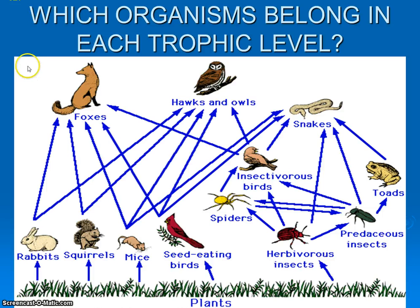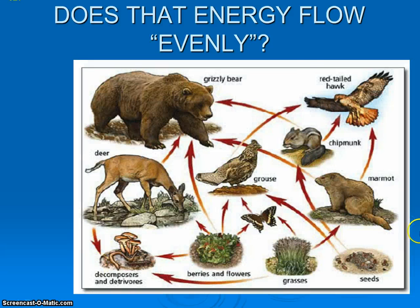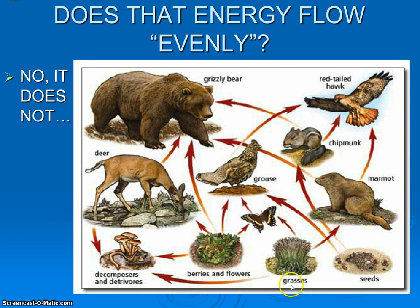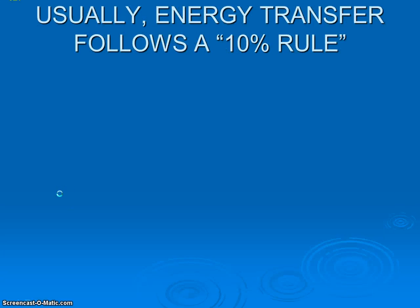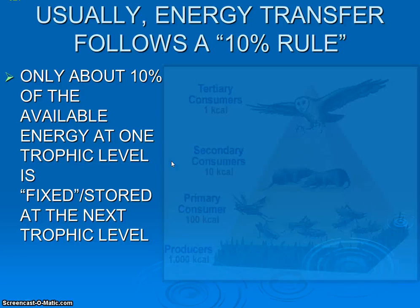It's important to be able to identify trophic levels. What we want to do now is look at a very important question: if we're going to follow that energy, is the energy shared evenly? Does it flow throughout these organisms evenly? What we're going to see is, unfortunately, in all food webs, the answer is no. The energy in the grass is not shared equally. It goes to the marmot, eventually to the hawk. The hawk is not getting all the energy that's in that grass.